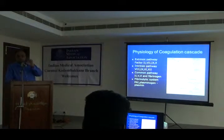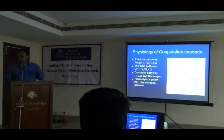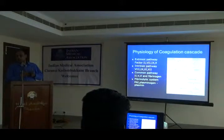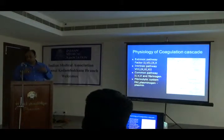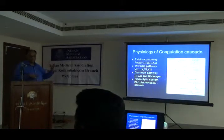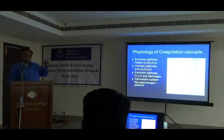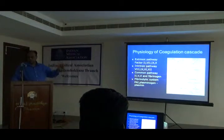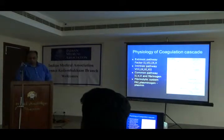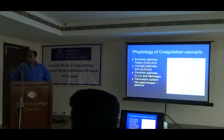In normal hemostasis, when there is an injury, primary hemostasis occurs first — platelets adhere to the site via GP1b and aggregate via GP2b3a. Then the clotting cascade activates: the extrinsic pathway involves factors 2, 7, and 9 triggered by cellular injury, while the intrinsic pathway involves factors 8, 9, 11, and 12. Both converge on a common pathway where thrombin converts fibrinogen to fibrin, forming the blood clot.